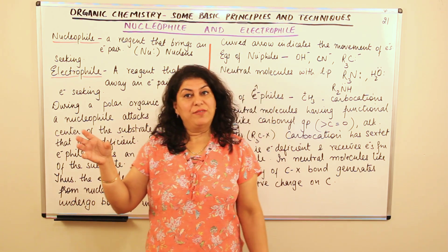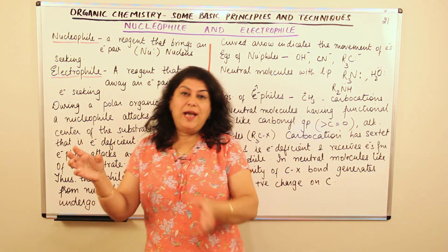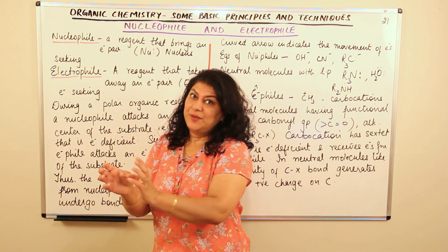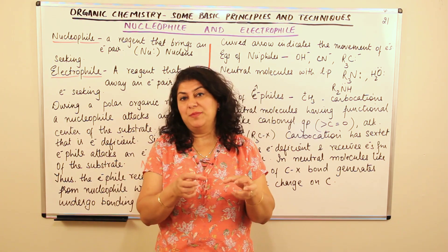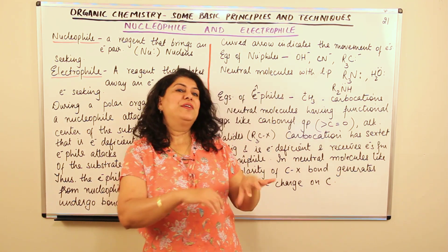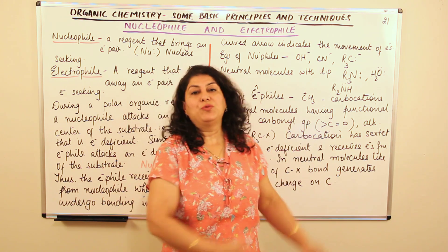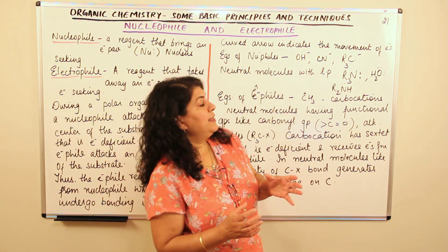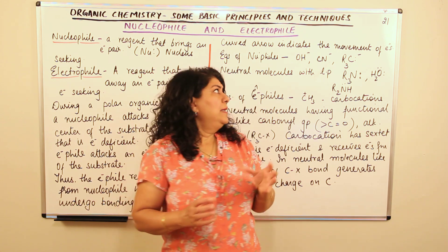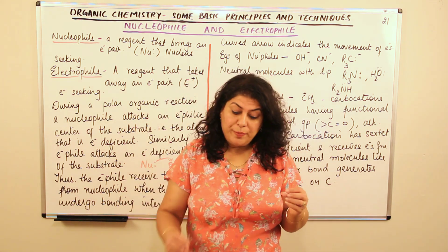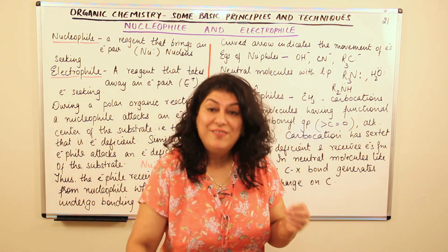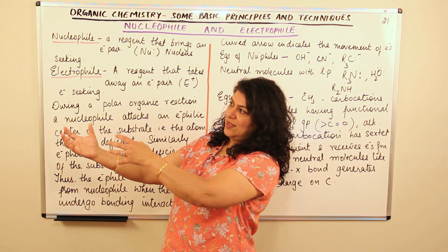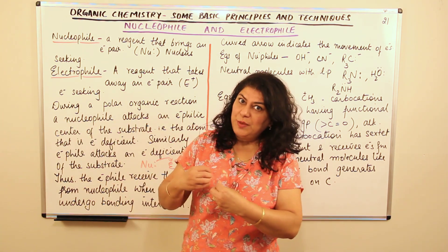In an organic reaction, you have a substrate and you have an attacking reagent. They react with each other and they result in the formation of an intermediate. Then the intermediate further reacts to give you the products. That is what we understood in part 19. And then in part 20, I told you about the cleavage of a covalent bond.